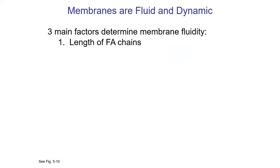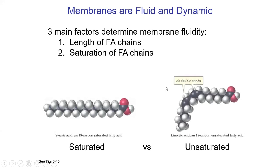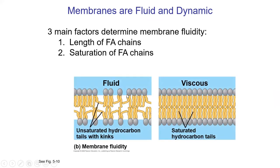What determines fluidity? First, fatty acid length — longer fatty acids are larger molecules and tend to be less fluid due to London dispersion forces. Second, saturation — saturated fats tend to be more solid like butter, while unsaturated fats are more liquid. Organisms can control membrane fluidity by altering their phospholipids. Unsaturated ones on the left are more fluid; saturated ones on the right stack better, giving a more solid membrane.